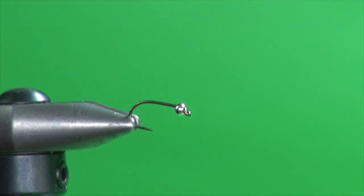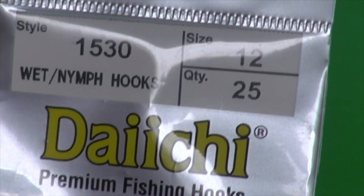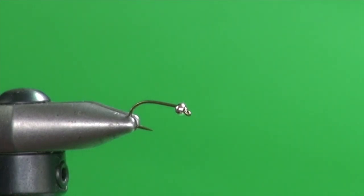All right, so let's tie the Tin Man. It's a little water boatman pattern named because it's got a silver tin colored bead and we're doing a boatman, so Tin Man. Into the jaws of the vise I've got a Daiichi 1530 size 12. 12s and 14s are what I tie this in most often.